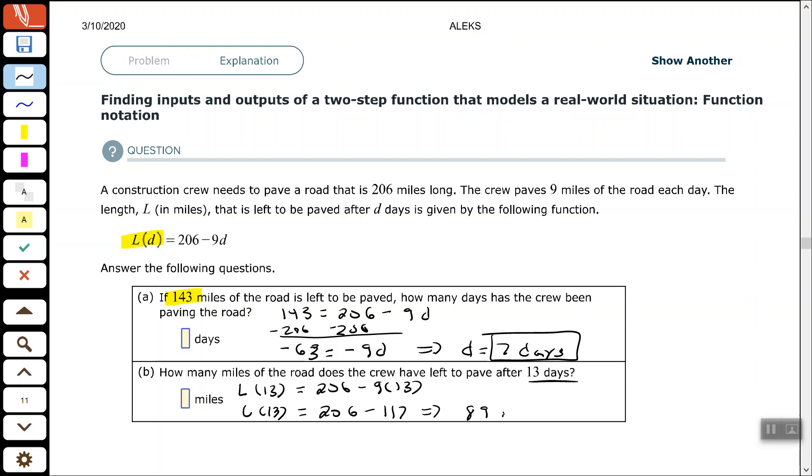And then 206 minus 117 tells us that 89 miles are left to be paved after 13 days. So we've paved 117 miles total, and we only have 89 miles remaining to be paved.